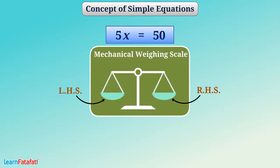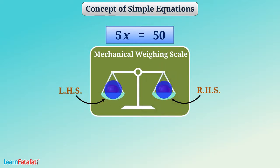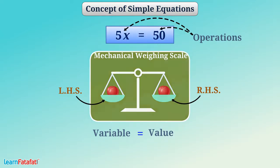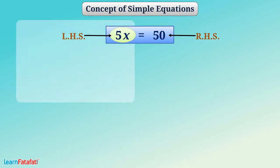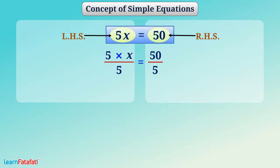In the weighing scale, if we put some weight on LHS, then we have to put equal weight on RHS as well to bring it to a balanced state. In the same way, we can go on doing operations on both sides to reduce the equation to the form: variable equals value. Here, we have to eliminate 5 from LHS. Since 5 is multiplied by x, to eliminate it we divide LHS by 5. To balance the equation, we must divide RHS by 5 as well. We can cancel 5 from numerator and denominator of LHS, so we get x on the LHS.